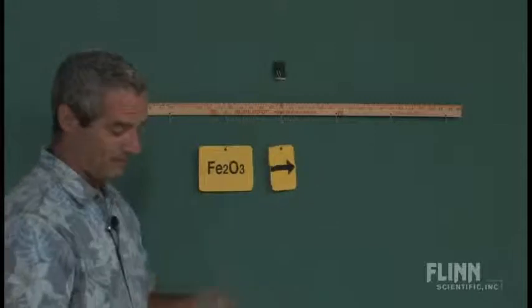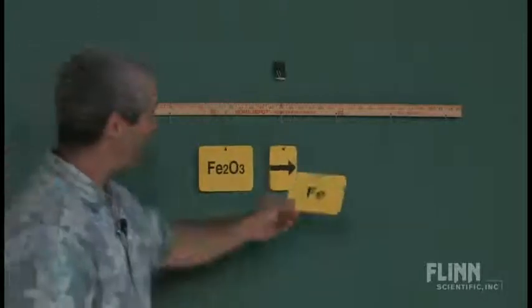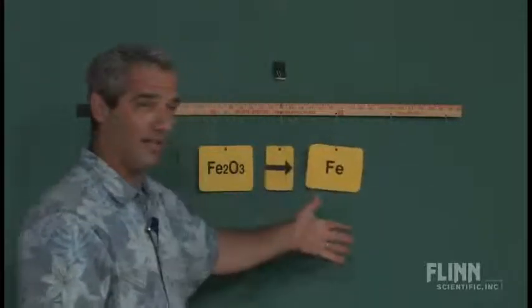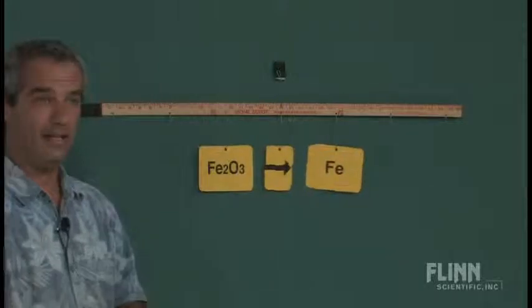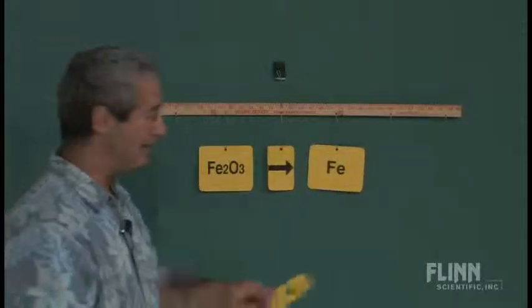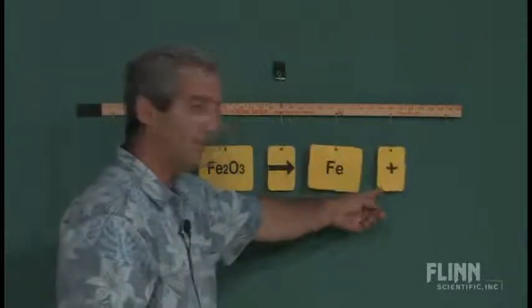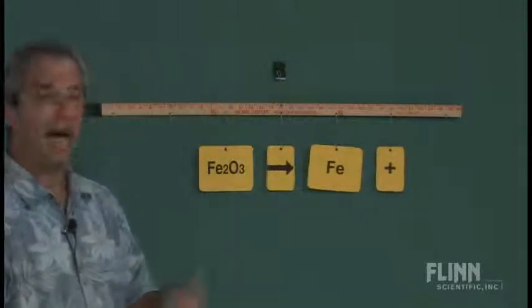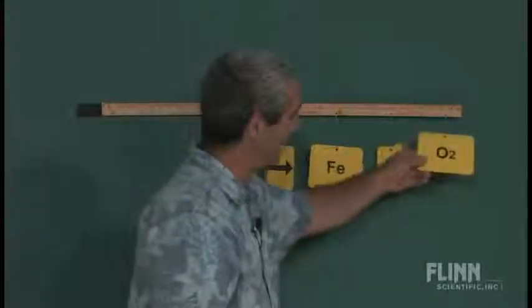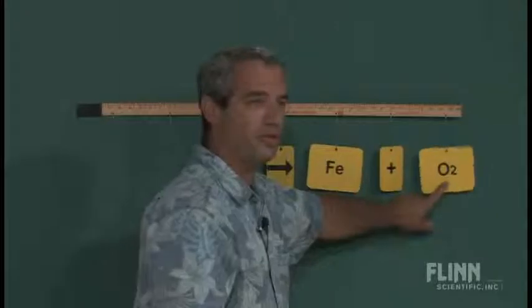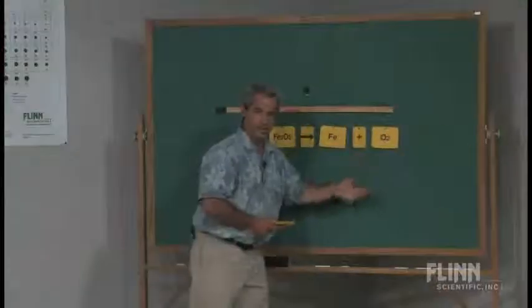It'll react, that's what that arrow is all about. It decomposes into elemental iron, just Fe. And we have a special symbol in chemistry for and, it's that one right there. I use it in math too. Oxygen, of course, oxygen being diatomic, it comes as O2. So there is a nice equation.